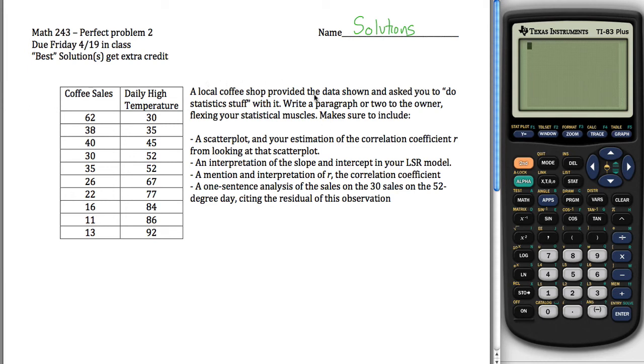All right, here are solutions to perfect problem 2 for Math 243, given a bunch of information and asked to do statistical stuff with it. In this case, the information we're given is the daily high temperature on 10 randomly selected days and how much coffee they sold on that day.